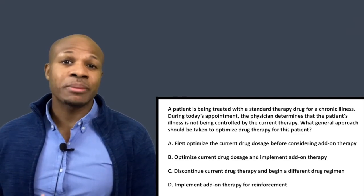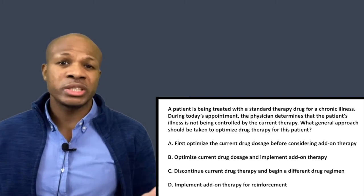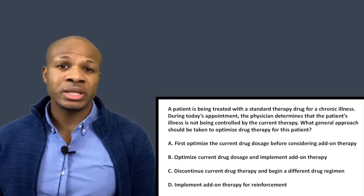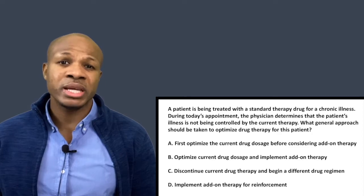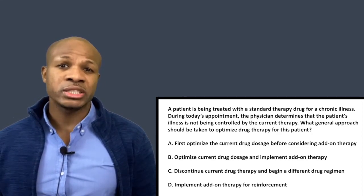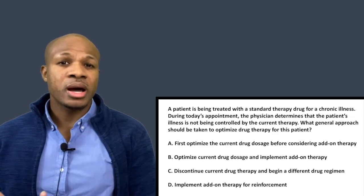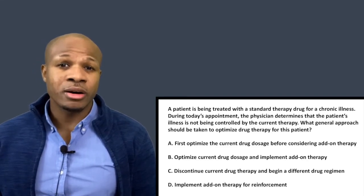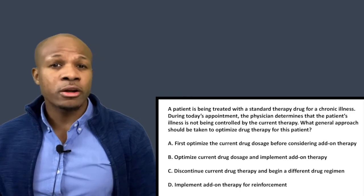You want to make sure the current treatment the patient is on is optimized. For example, if the illness is hypertension, depending on severity you would start with a low or high dose. You want to make sure the dose is optimized — maybe the current dose is too low. So you would recommend increasing the dose if possible. After optimizing the dose, have the patient return for reassessment. If the disease is still not under control, then typically you would add on an additional therapeutic.